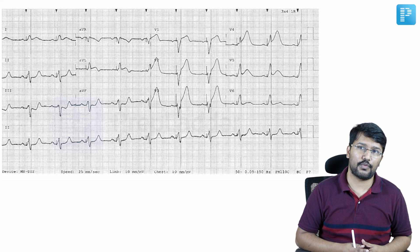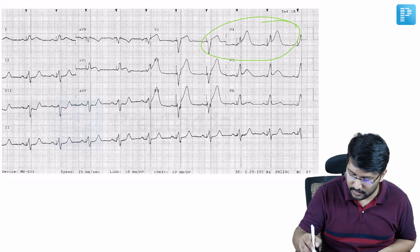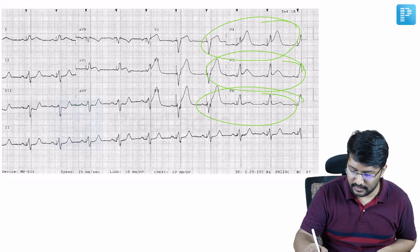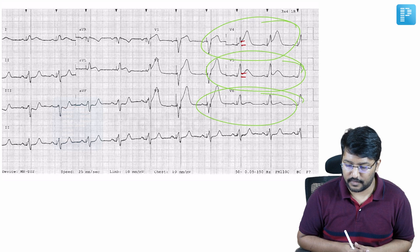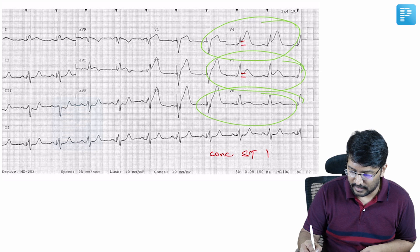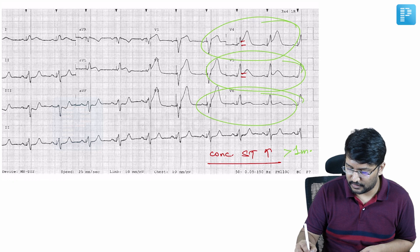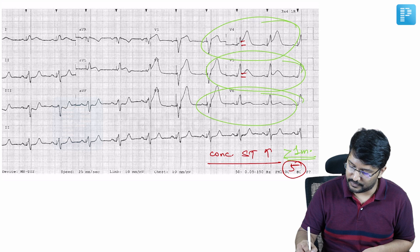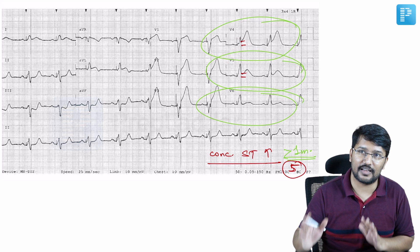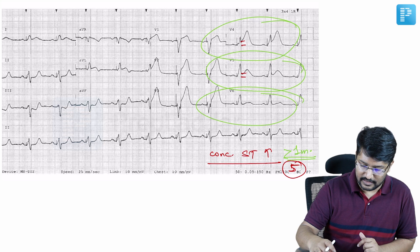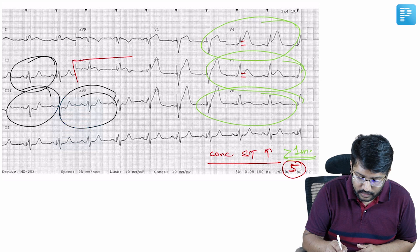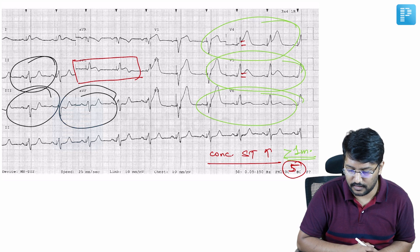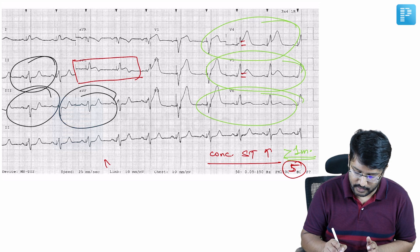Now, talking about the next ECG, let us apply Sgarbossa's criteria. Looking at this ECG, you will notice that in V4, V5, and to some extent V6, you can clearly see there is a concordant ST elevation definitely more than one millimeter. This is a case of LBBB — you can see the broad QRS complexes — but we have evidence of concordant ST elevation in V4, V5, V6 of more than one millimeter. According to Sgarbossa, this patient gets a score of five points, which is definitely enough to diagnose MI since more than three is diagnostic. Screening other leads, I also see concordant ST elevation in AVL and ST depression in leads II, III, AVF, which are probably reciprocal changes. My diagnosis in this ECG is myocardial infarction in a patient with pre-existing left bundle branch block.